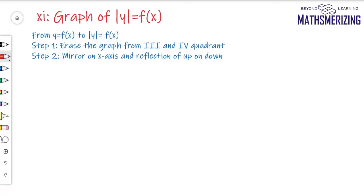The next transformation is to draw the graph of |y| = f(x) from y = f(x). For this, there are two steps: erase the graph from the third and fourth quadrant, then place a mirror on the x-axis and take the reflection of the upper part downward.